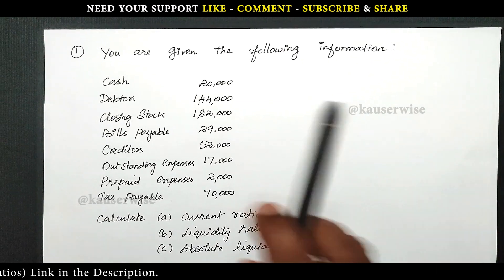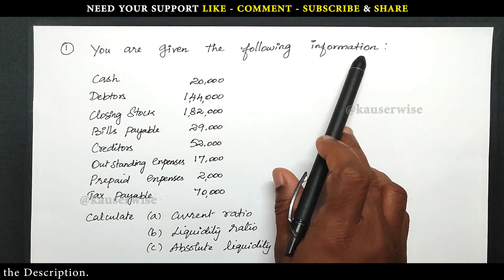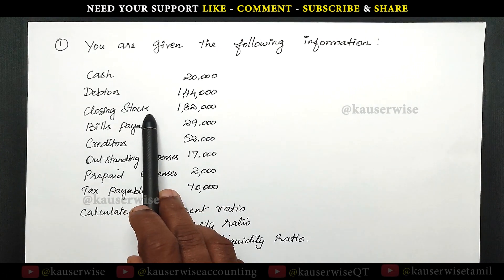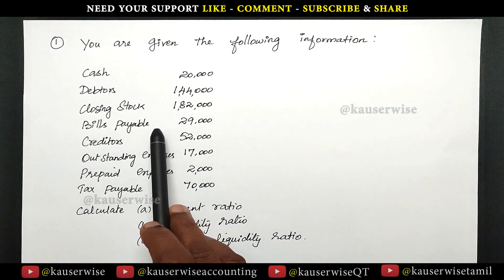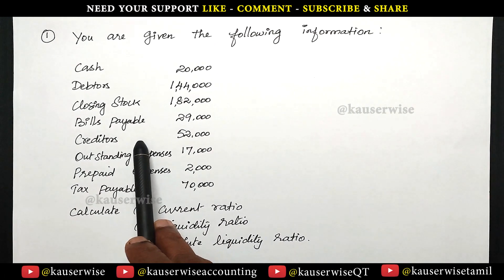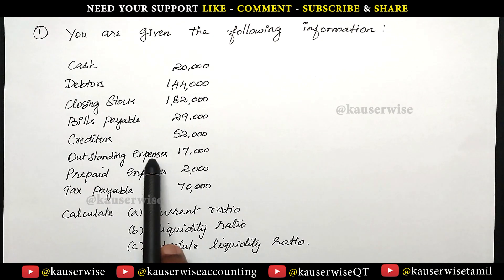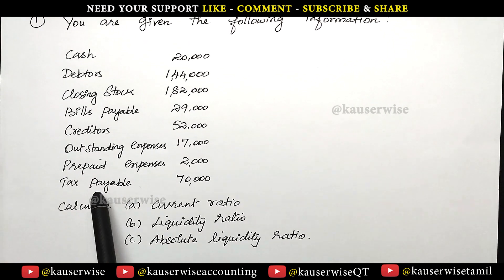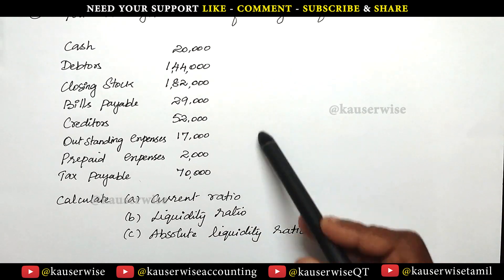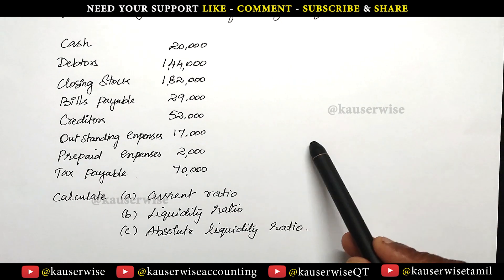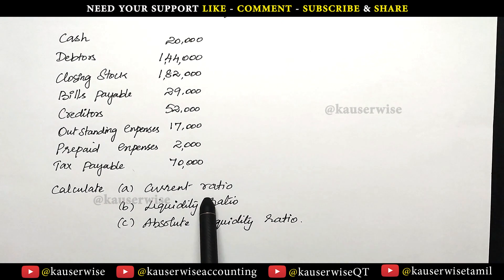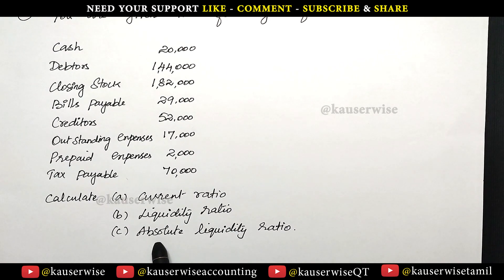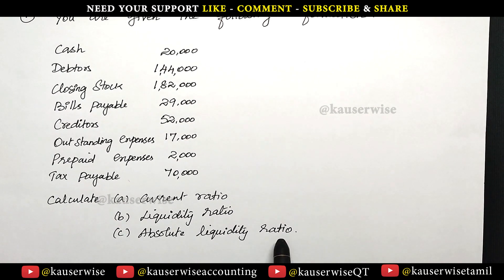See the problem. You are given the following information: cash, debtors, closing stock, bills payable, creditors, outstanding expenses, prepaid expenses, and tax payable. With this information, they are asking you to calculate current ratio, liquidity ratio, and absolute liquidity ratio.